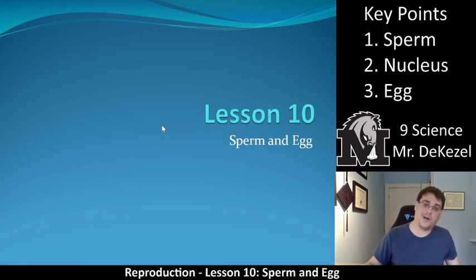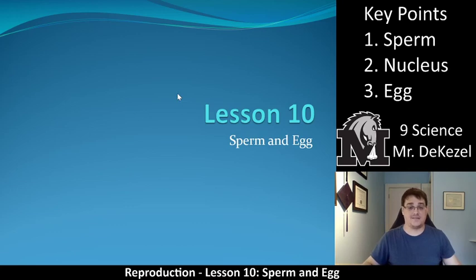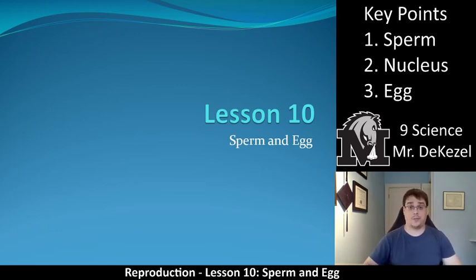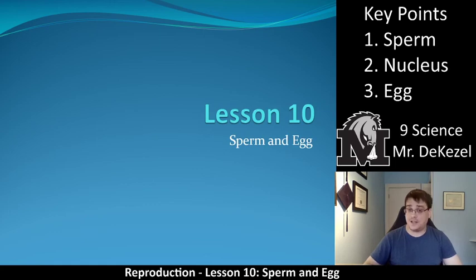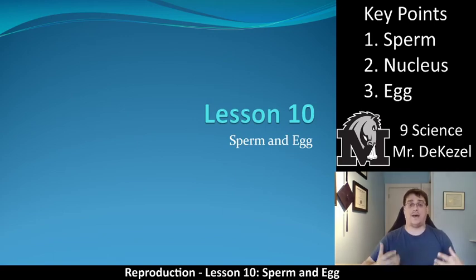Hello everyone, welcome back again to lesson 10. This lesson is all about sperm and egg cells. We've been talking about them a lot — the process by which they are produced (meiosis), and how they can meet inside and outside the body through external and internal fertilization. Now we're going to dig into the structure of the sperm and the structure of the egg and how that helps them function.